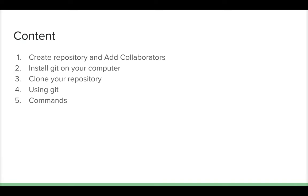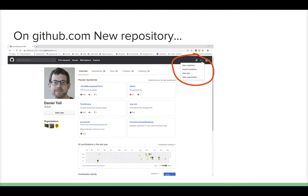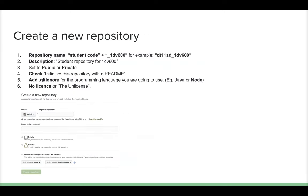First, go to GitHub and you need an account. Click New Repository — it's under the plus sign. Then fill in the information for the repository. I suggest you use your student code as well as the course name, for example 'dt11ad_1db600' for the course 1db600.